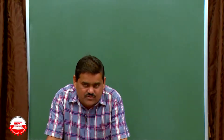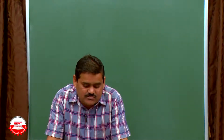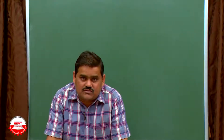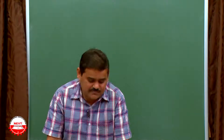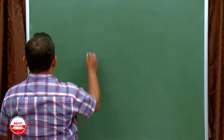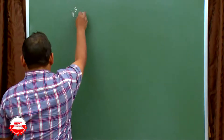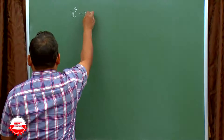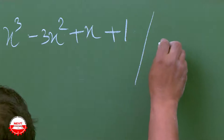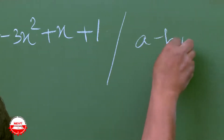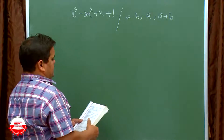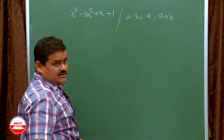Question number 3 and 4 are important questions — in some CC exams I have noticed that these questions are coming. Question number 3: if zeros of the polynomial x cubed minus 3x squared plus x plus 1 are a minus b, a, and a plus b, then find the value of a and b.